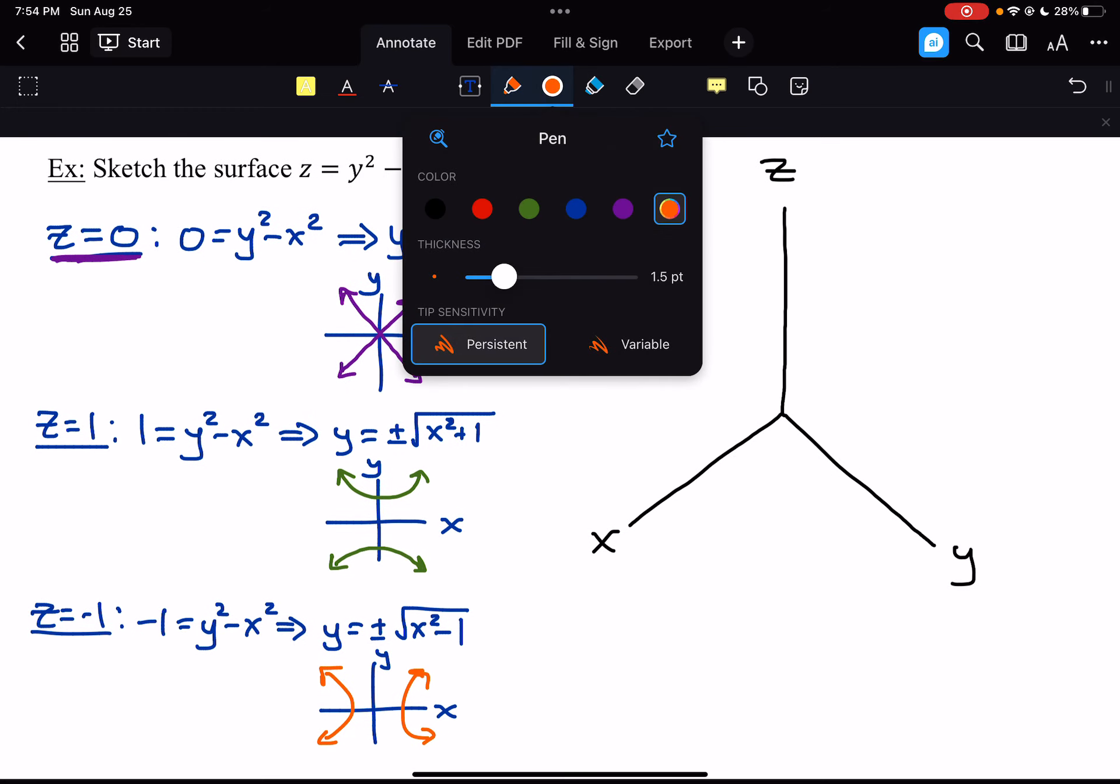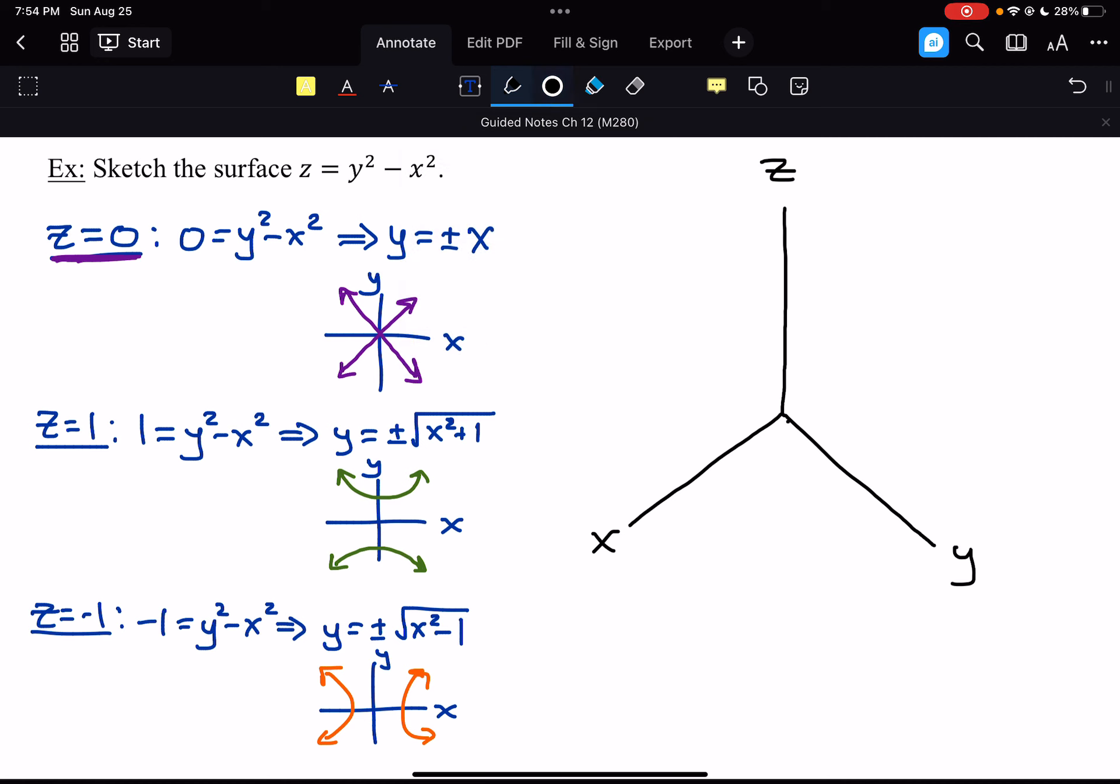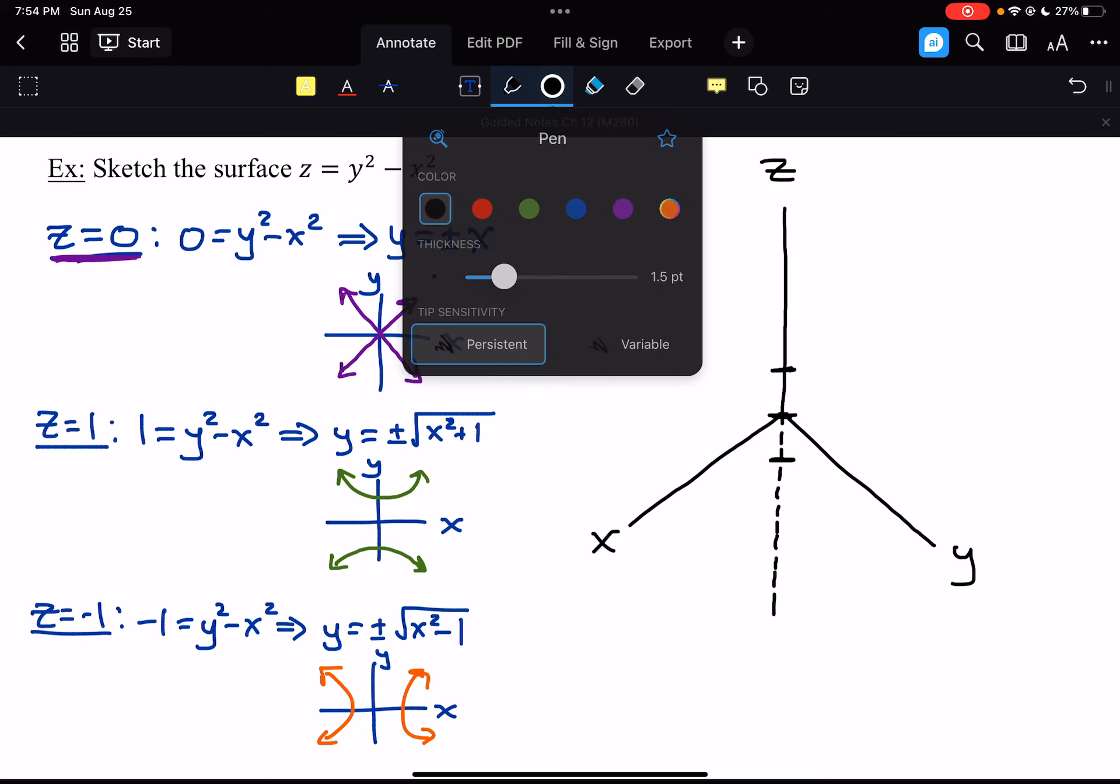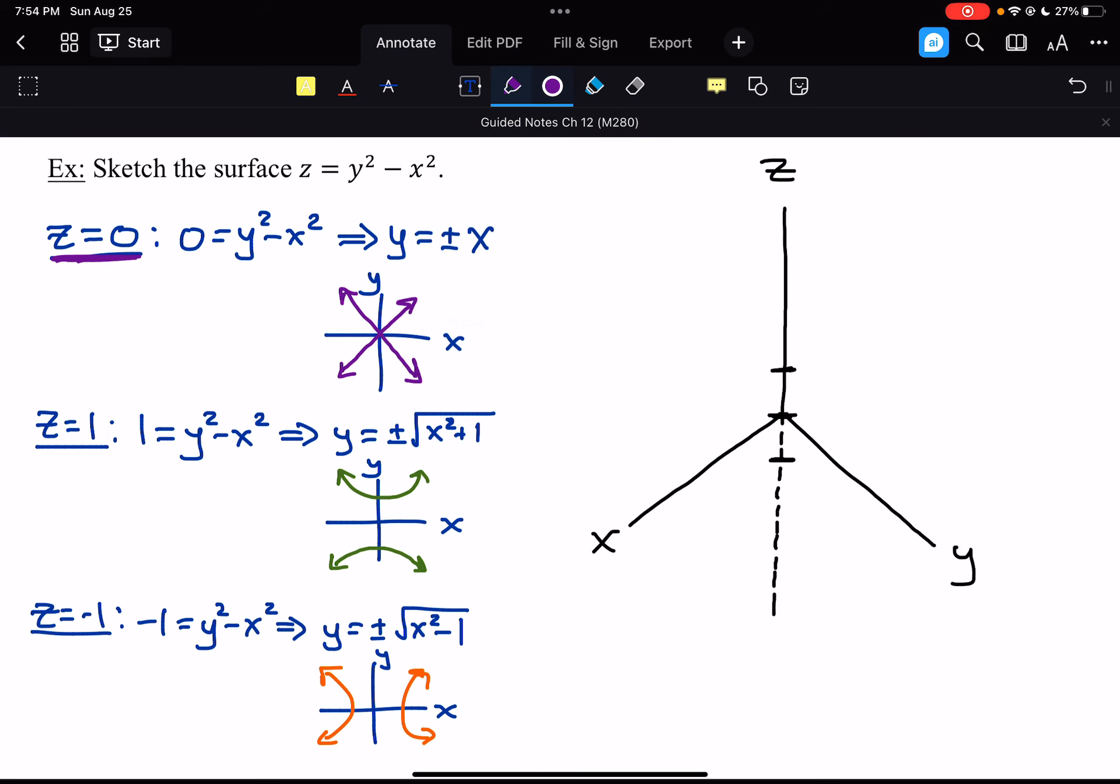So, we get three different versions of this graph. So, we have it at z equals 0, at z equals 1, and z equals negative 1. So, let me go ahead and give just kind of a rough sketch here of these. And I don't want to put them on too solid because we're going to kind of draw over them.